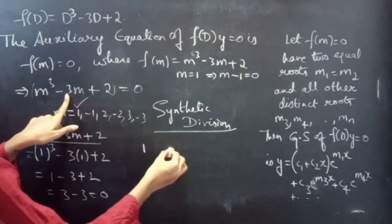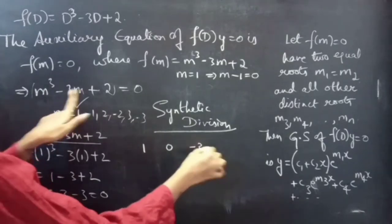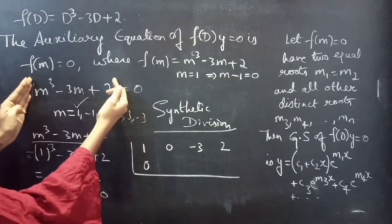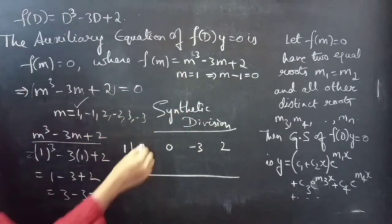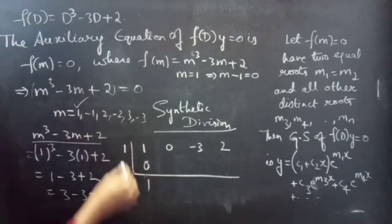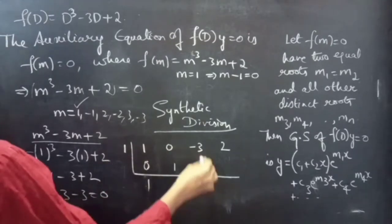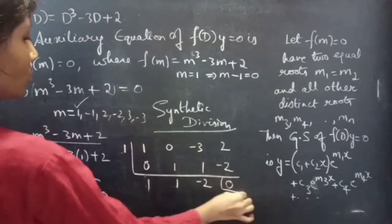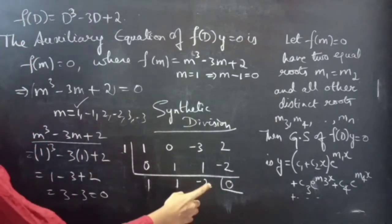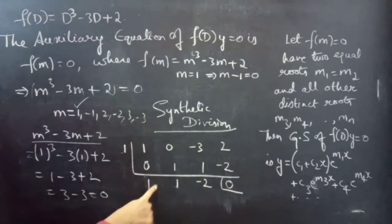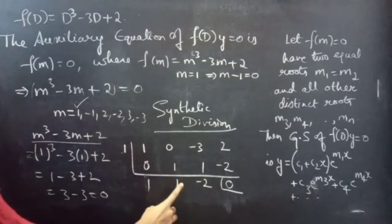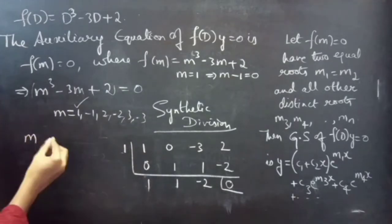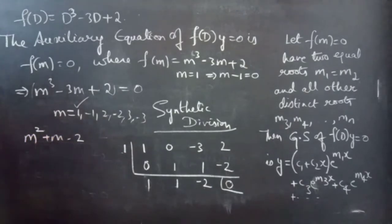The polynomial m cubed minus 3m plus 2 has no square term, so the coefficients are 1, 0, minus 3, 2. Dividing by m equals to 1: bring down 1; 1 times 1 is 1, 0 plus 1 is 1; 1 times 1 is 1, minus 3 plus 1 is minus 2; 1 times minus 2 is minus 2, 2 minus 2 is 0. Our next polynomial is m squared plus m minus 2.